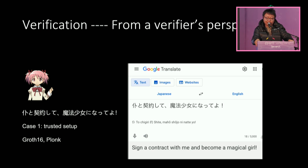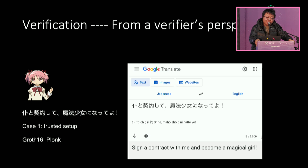Usually it's the people who use Groth16 or Plonk to do such tasks. However, such processes require a lot of resources, and also introduce additional trust. The prover needs to do very computationally expensive operations, like MSM or FFT.